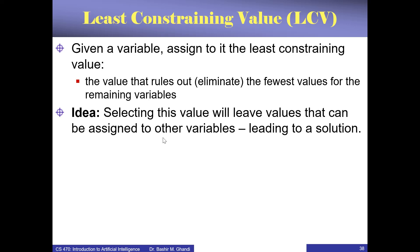So assign a value to this variable that will allow more options to the others. Choose the least constraining value — the value that will not constrain too much the remaining variables so they still have options. This will allow us to continue with the solution without terminating immediately. If we choose a constraining value, the algorithm may terminate and we have to backtrack even when there are possibilities for a solution.